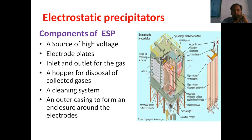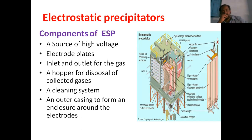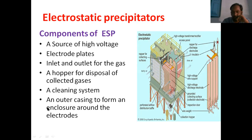An electrostatic precipitator must contain the following components: a source of high voltage, electrode plates, inlet and outlet for the gas, a hopper at the bottom for disposal of collected particles, a cleaning system — generally a vibrating system to vibrate the electrodes — and an outer casing forming an enclosure around the electrodes.